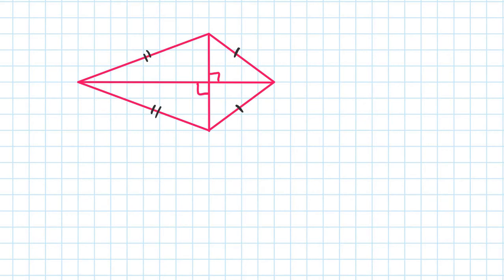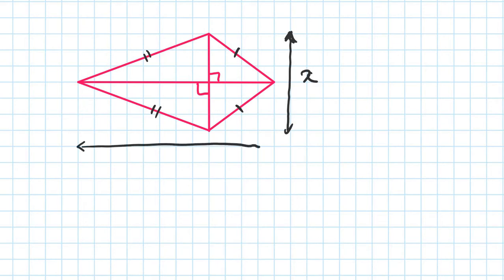To find the area of this kite, let's say the length of this diagonal is x and the length of this is y. Now if you think about it, you actually have two triangles.